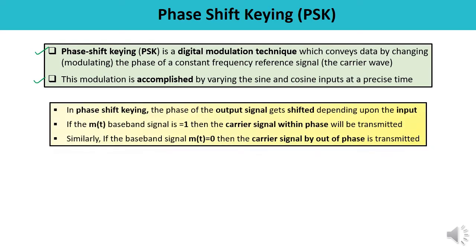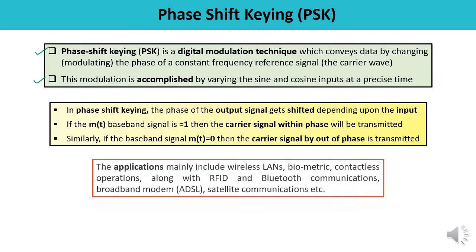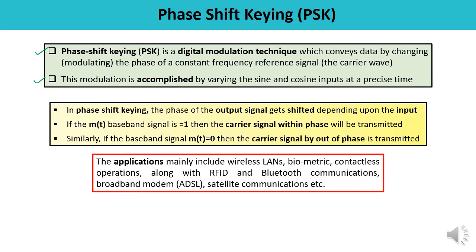PSK is widely used in a number of applications like wireless LAN, biometric, contactless operations, RFID, Bluetooth communication, and satellite communications. In phase shift keying, the phase of the output signal gets shifted depending upon the input. If the baseband signal is 1, the carrier signal will be in phase. And if it is 0, the carrier signal will be out of phase — 180 degrees shifted — which is what gets transmitted.